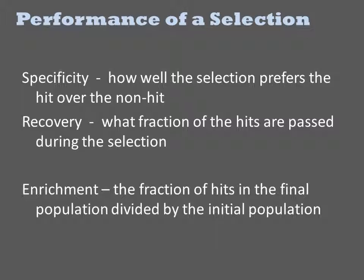Before we see some additional examples, let's discuss the concept of enrichment. These terms — enrichment, specificity, and recovery — are quantitative measures of changes in the diversity of a library towards a subpopulation of hits. Enrichment is the main one, which is just the frequency of your hits within the final population divided by their frequency in the initial population. Enrichment is determined by the specificity and recovery. Specificity is how well the selection prefers the hit over the non-hit, while recovery quantifies how efficient the selection is at retaining the hits. Typically you don't need to worry about specificity and recovery, since they are rolled into enrichment.